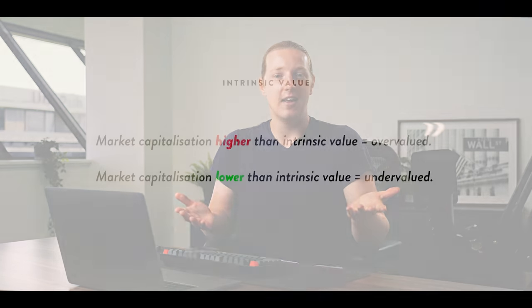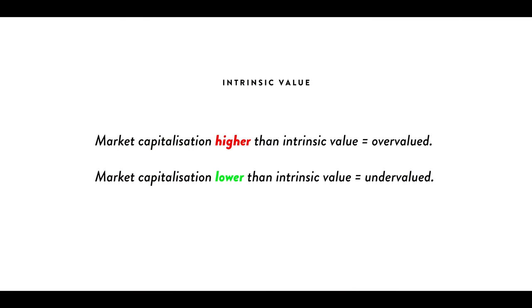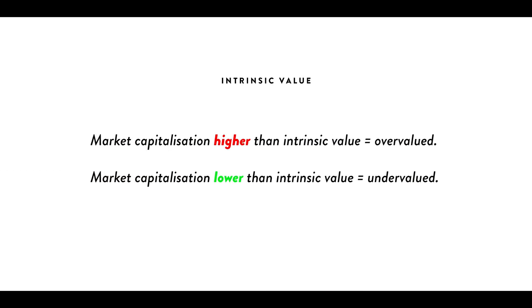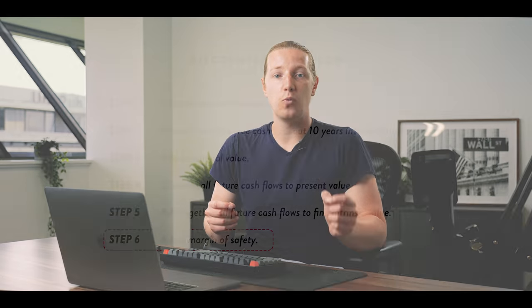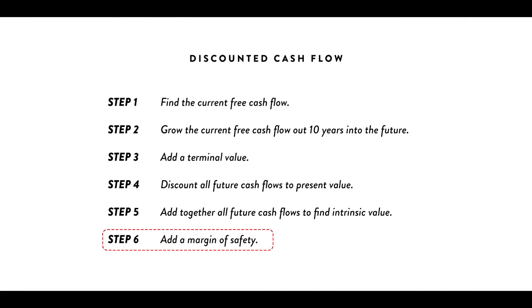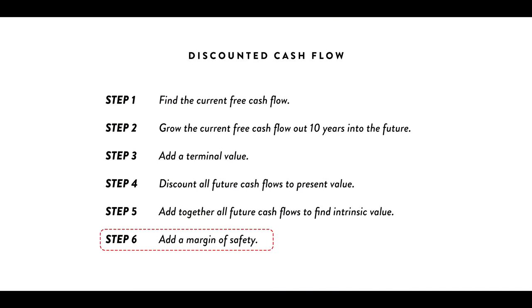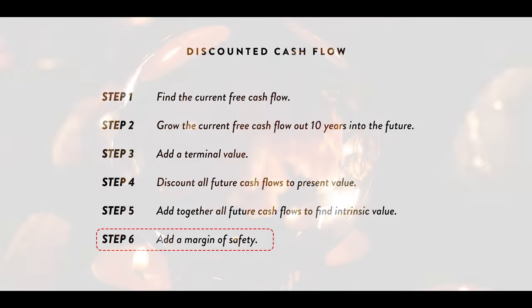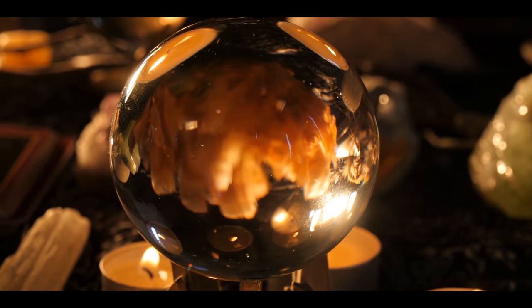It makes sense, right? If the market cap is below the intrinsic value, then it suggests we could buy the business at its current stock market value and we'd likely make 15% returns per year. However, there is one more step. After this point, we have to add a margin of safety to our intrinsic value, because all the stuff we've just done is technically trying to predict the future — and you can't predict the future with 100% accuracy.